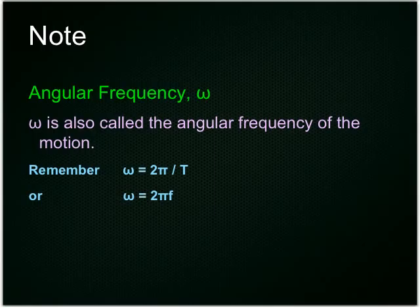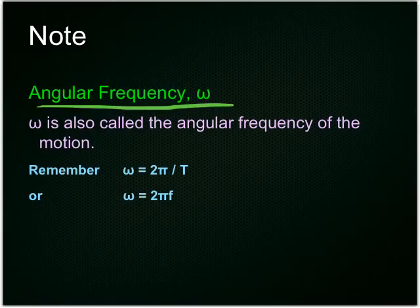And this is just a note to remember, angular frequency, which we've done in topic 1. Omega is also called the angular frequency of the motion. And it's 2 pi over T or 2 pi F.